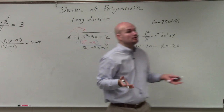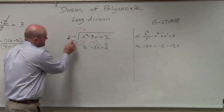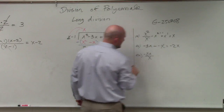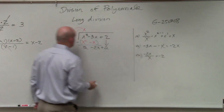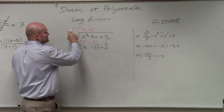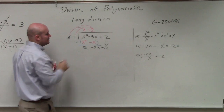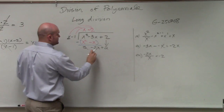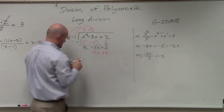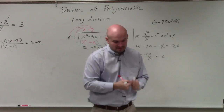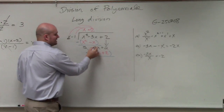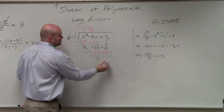And now we start all over again. How many times does x divide into negative 2x? Negative 2x divided by x equals negative 2. So I write a negative 2 up here and do the same thing — multiply negative 2 times both terms in my divisor. Negative 2 times x gives me negative 2x, and negative 2 times negative 1 gives me positive 2. Then subtracting my rows: negative 2x minus negative 2x is 0, and 2 minus 2 is 0.